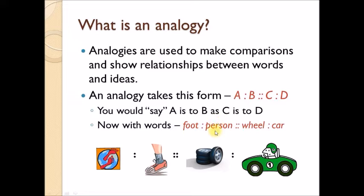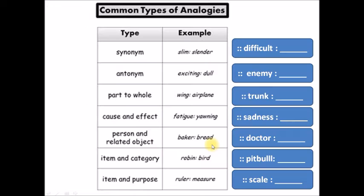Now we're going to look at what we mean when we say look at the relationships between words. There are different types of analogies. One type is synonym. When you are given an analogy, try to identify what type of relationship exists between both words. If you are given slim is to slender, those two words are synonyms. So slim is to slender as difficult is to hard. The pairs are synonyms.